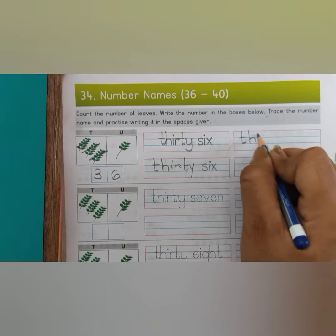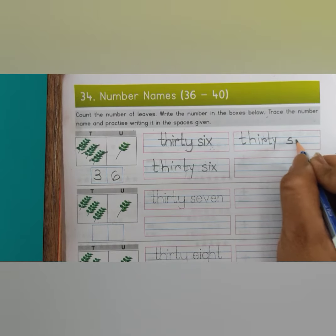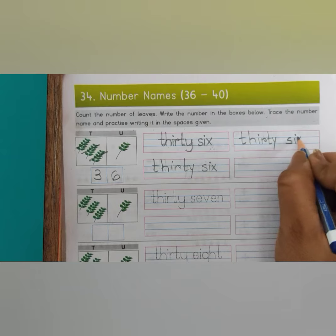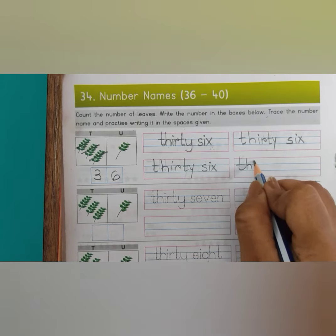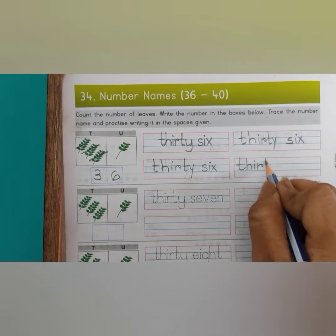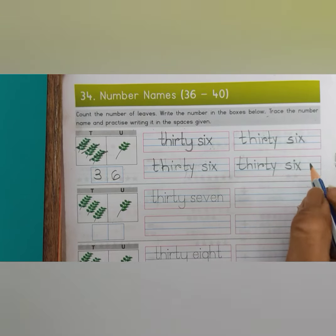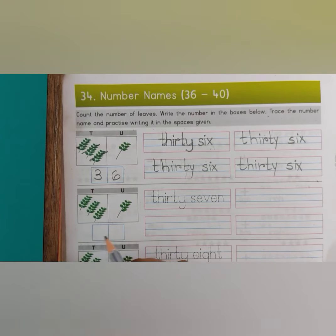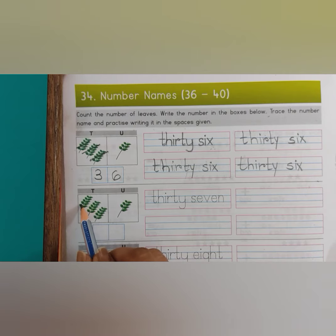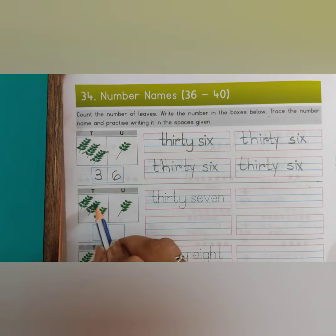T, H, I, R, T, Y — S, I, X. T, H, I, R, T, Y — S, I, X. Now we have to count the groups.